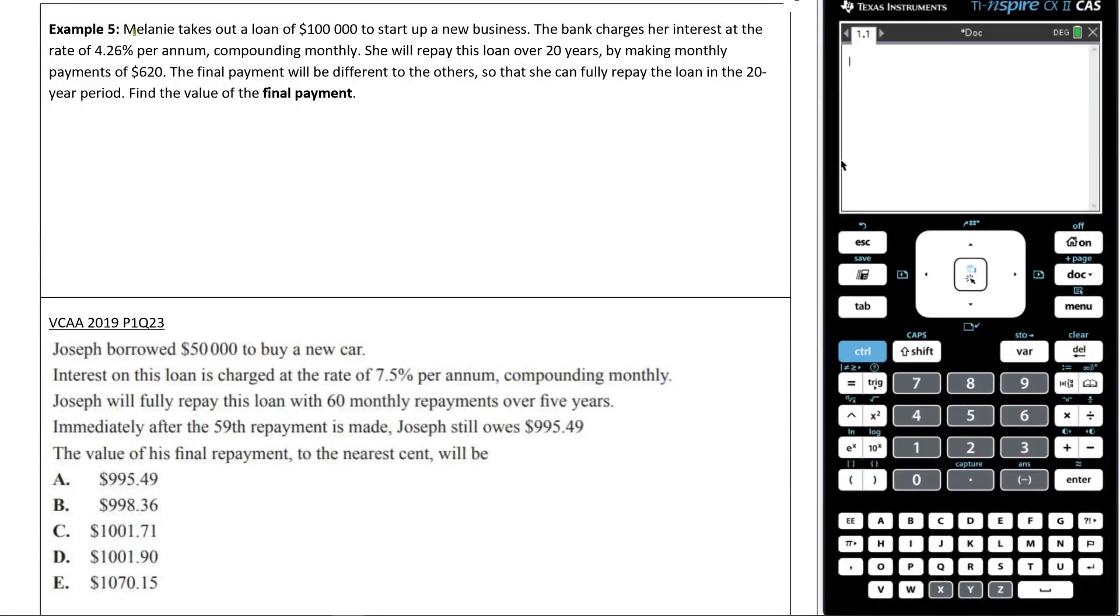Alright, let's now answer example 5. It says Melanie takes out a loan of $100,000 to start up a new business. The bank charges her interest at a rate of 4.26% per annum compounding monthly. She will repay the loan over 20 years, making monthly payments of $620. The final payment will be different to the others, so she can fully repay the loan in the 20-year period. Find the value of the final payment.